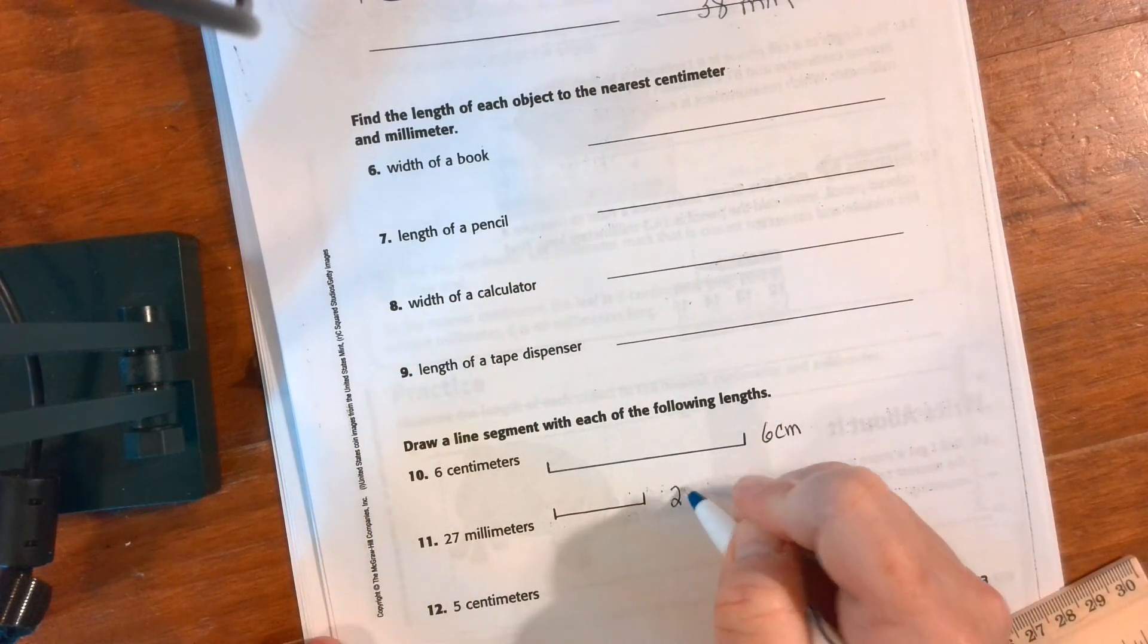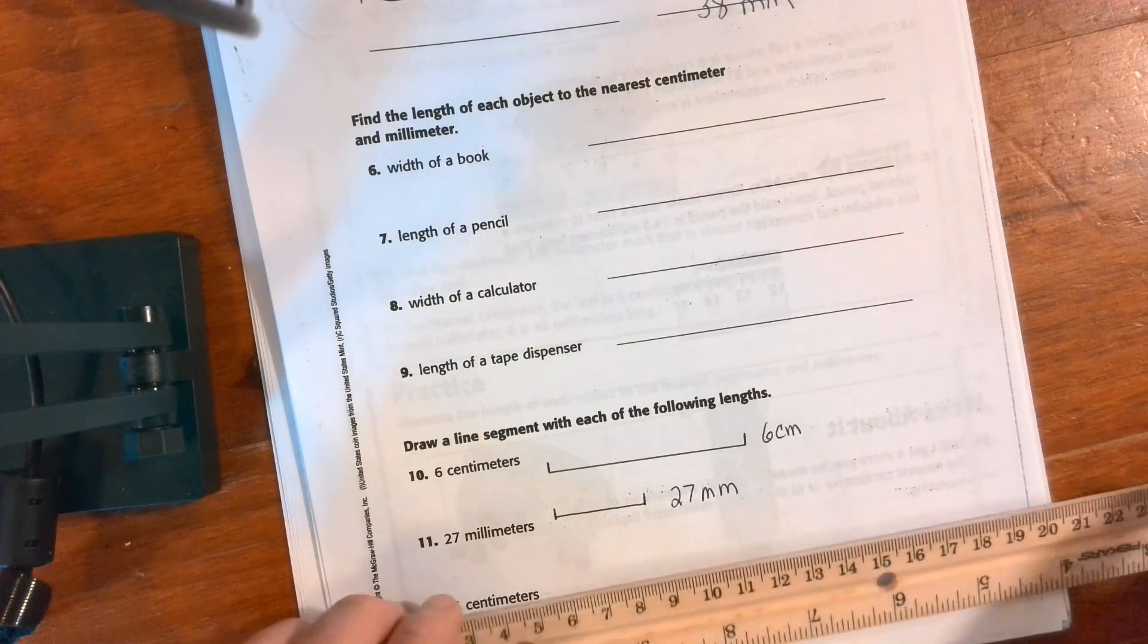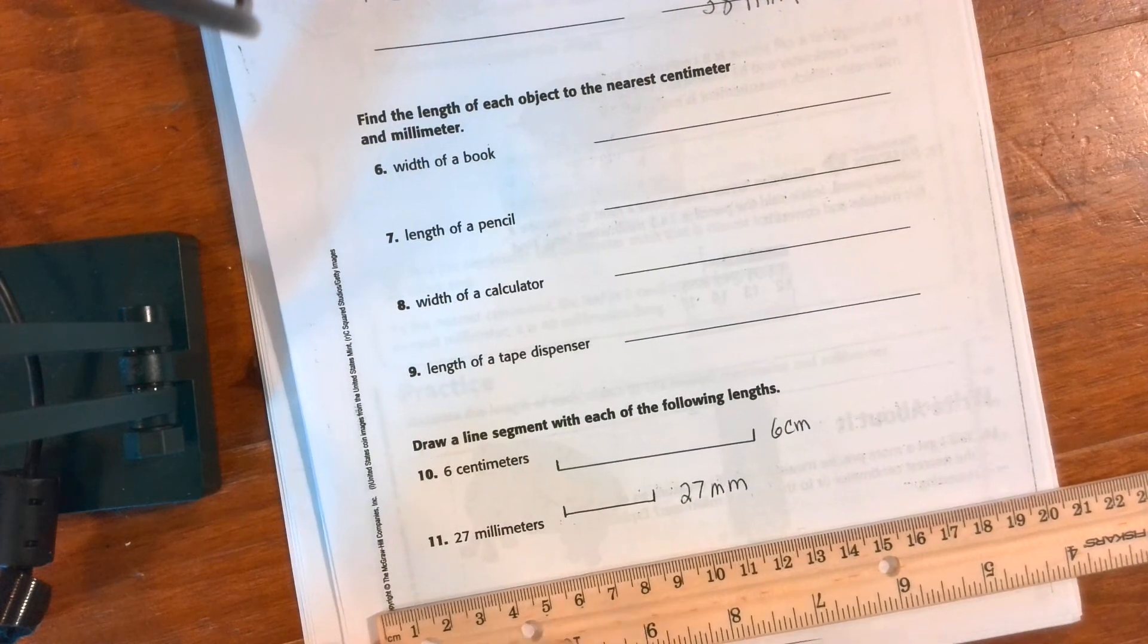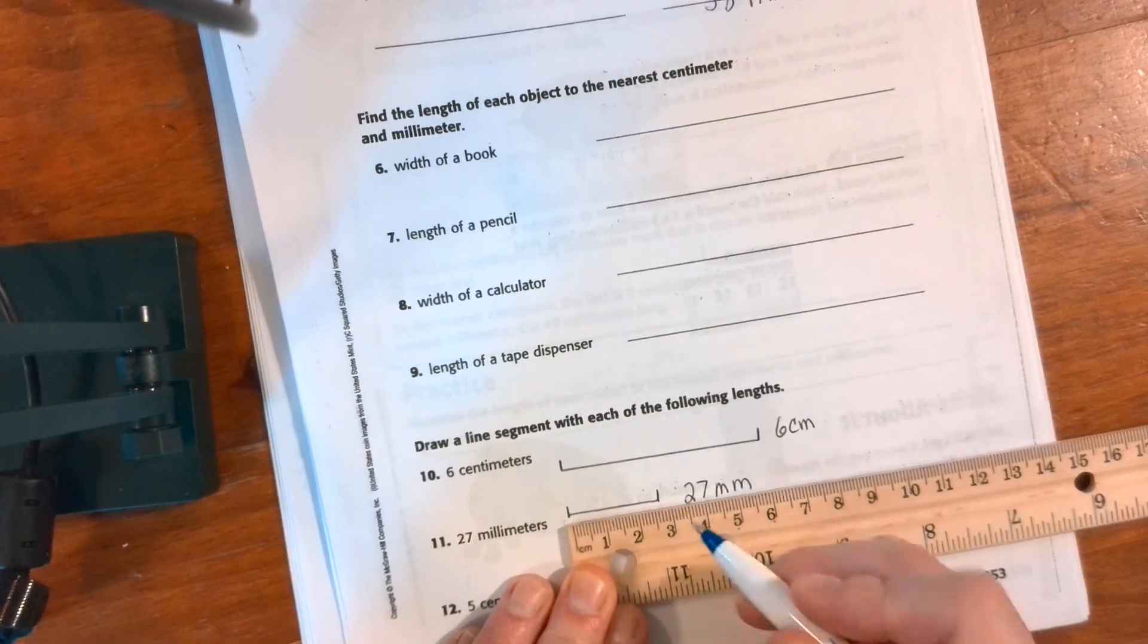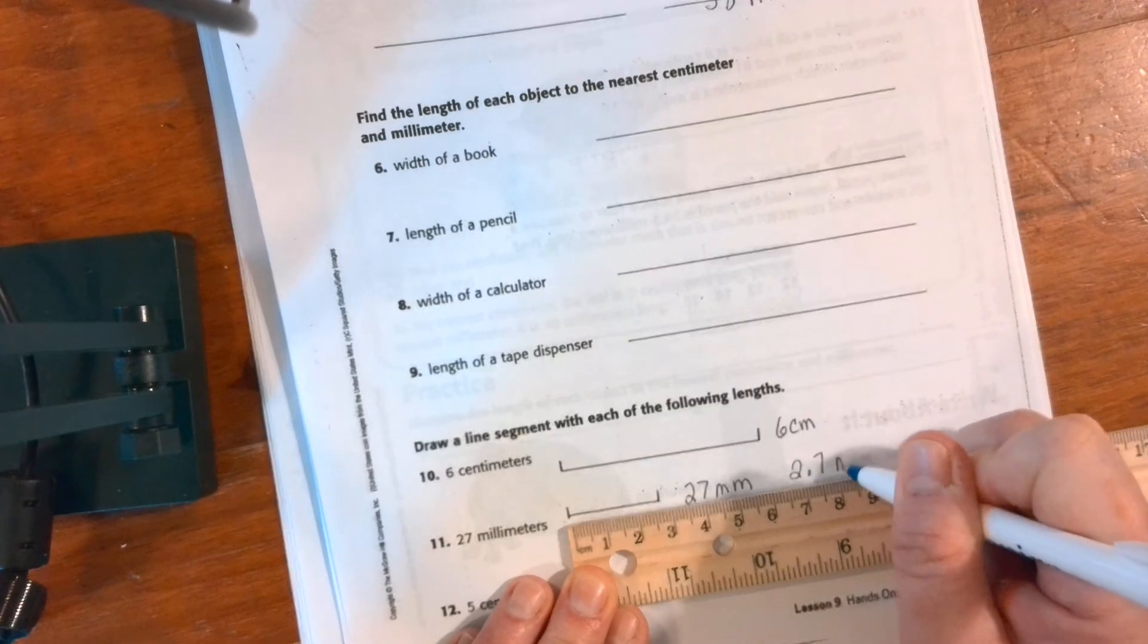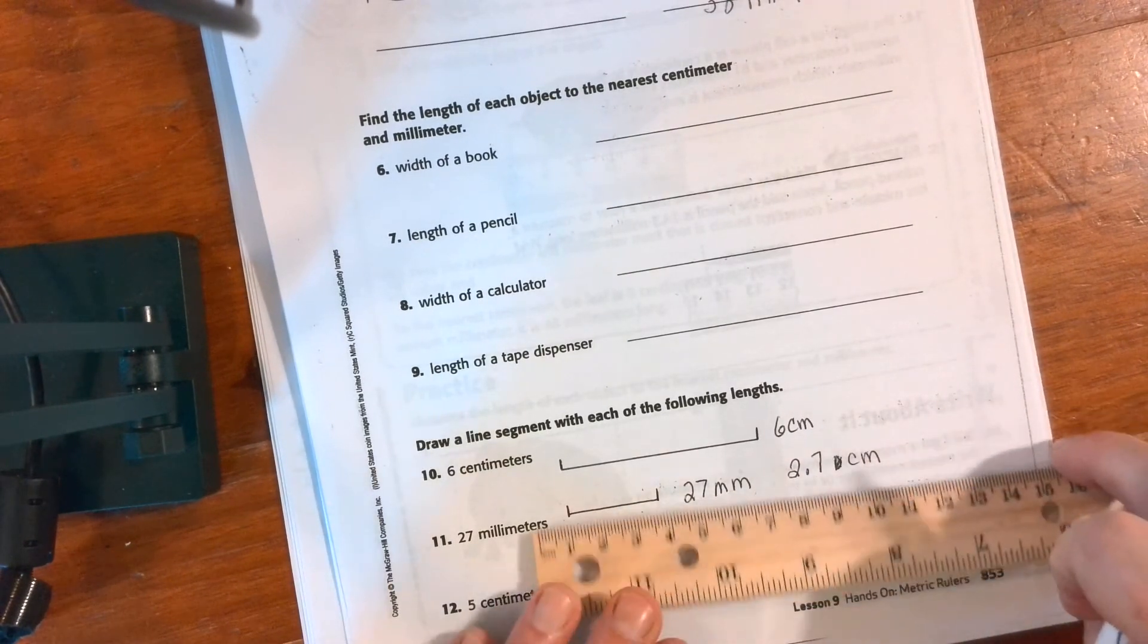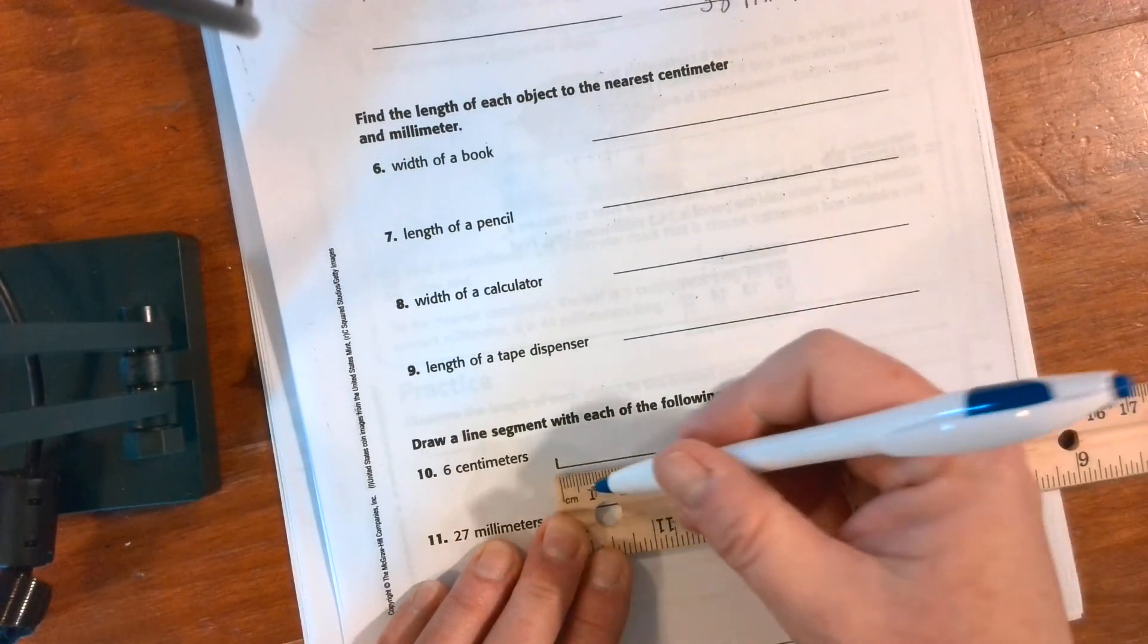Can anyone think how we would write this in centimeters and then decimals? So we have 2.1, 2, 3, 4, 5, 6, 7 - two point seven centimeters. How could we write six as millimeters? 10, 20, 30, 40, 50, 60. Sixty millimeters.